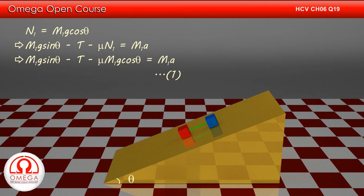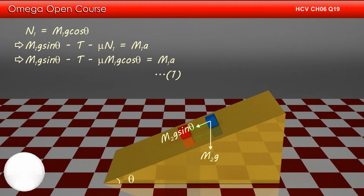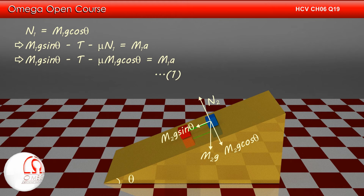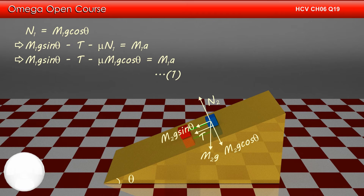Now draw the free body diagram of the upper block. Gravity is M2g in the downward direction, with component M2g sin theta along the incline and M2g cos theta perpendicular to the incline. Normal contact force N2 acts perpendicular to the surface. Tension due to the rod pulls the block down the incline with force T, and friction acts up along the incline with magnitude mu·N2.